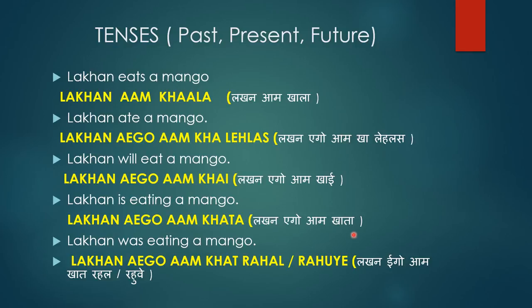Now let's see the next sentence. 'Lakhan was eating a mango' — this is past continuous tense. In Bhojpuri: 'Lakhan aego aam khat rahal' or you could also say 'Lakhan aego aam khat rahe.' So he was eating a mango. This is how the sentence pattern goes.